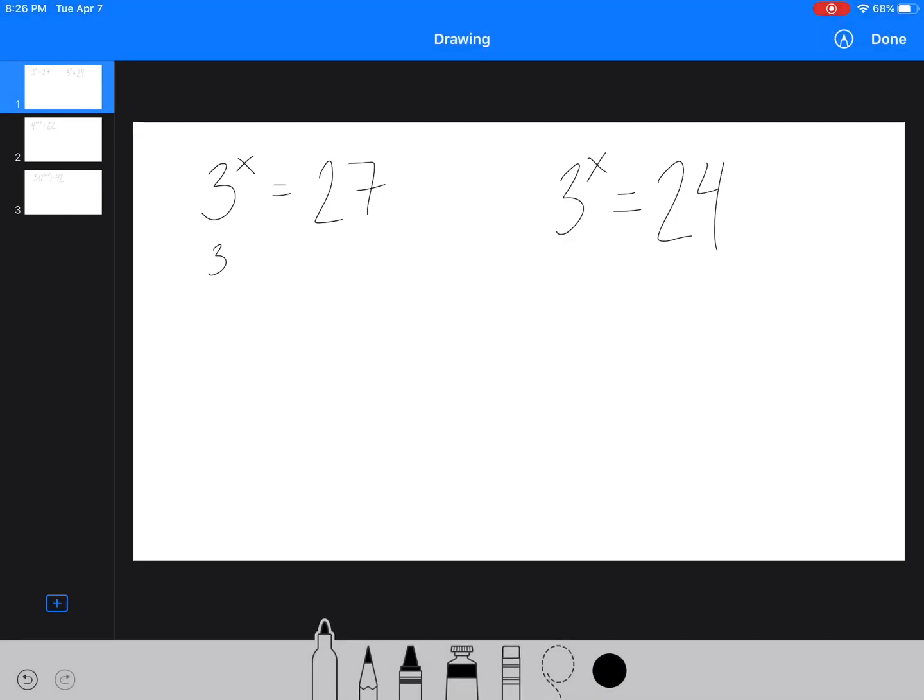So if we had something that was like 3 to the x equals 27 and we wanted to solve for that, we would just make this 3 to the 3 and therefore x equals 3.